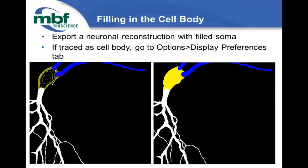If you traced the soma as contours, use the Editing tool (Edit > Select Objects), draw a marquee around those contours, right-click, and select Set to Cell Body. Then when you go to Options > Display Preferences and enable fill, you'll see a nice solid structure. A handy trick: set your display preference to fill cell bodies by default so you can immediately tell when you load a reconstruction whether contours need to be changed to a cell body.